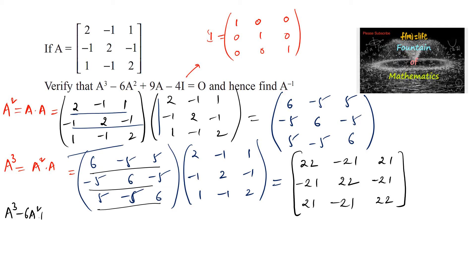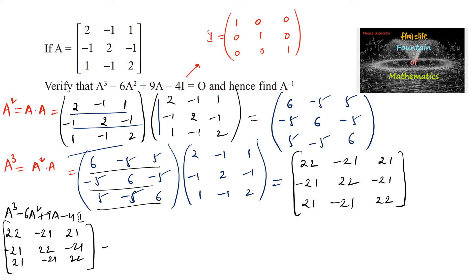Now let's compute the LHS: A³ - 6A² + 9A - 4I. A³ = [22, -21, 21; -21, 22, -21; 21, -21, 22]. Then 6×A² gives us: 6×6=36, 6×(-5)=-30, 6×5=30, giving 6A² = [36, -30, 30; -30, 36, -30; 30, -30, 36].